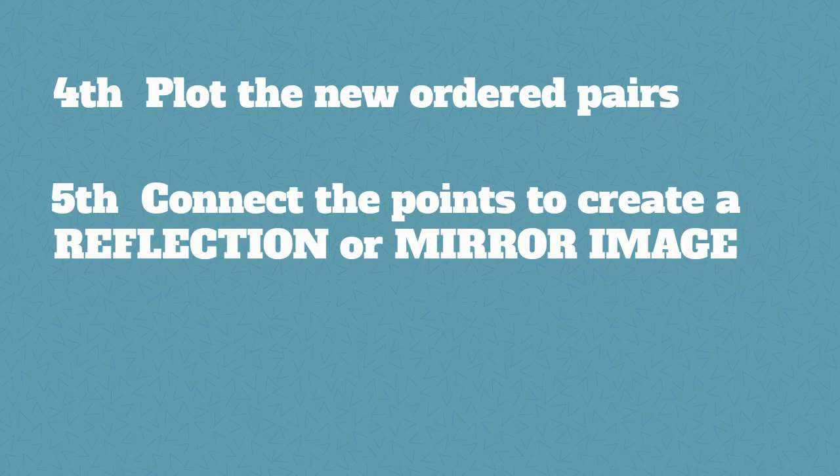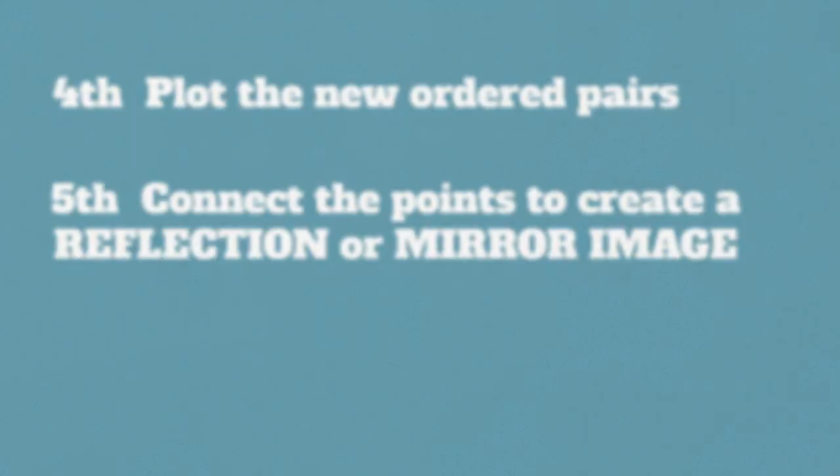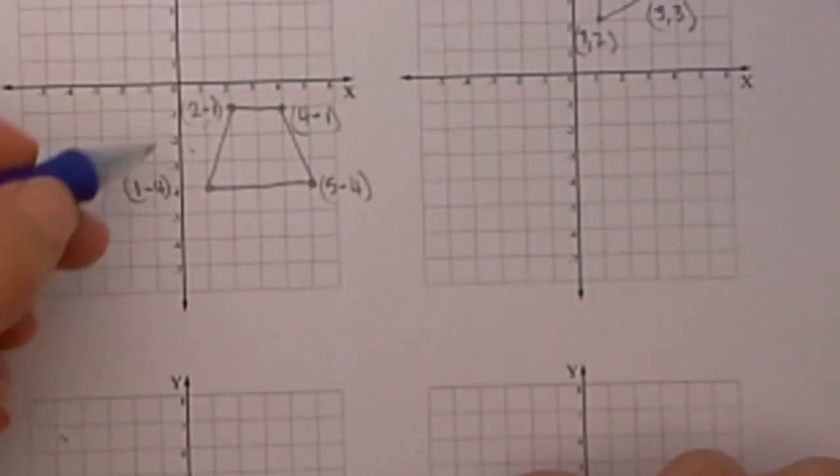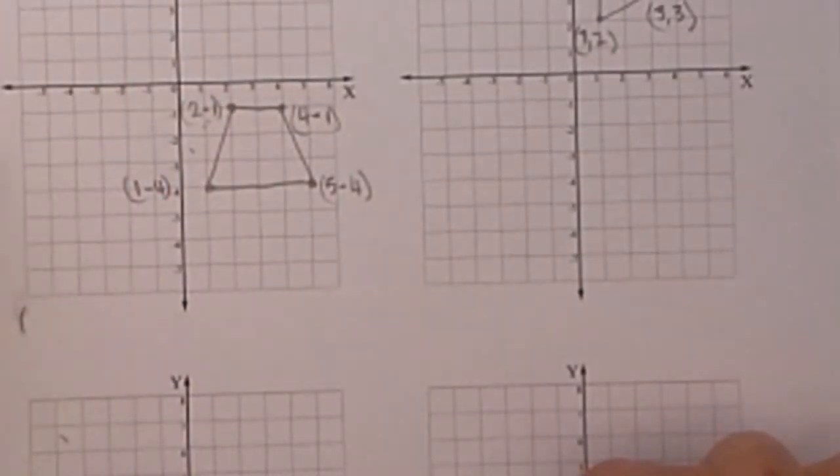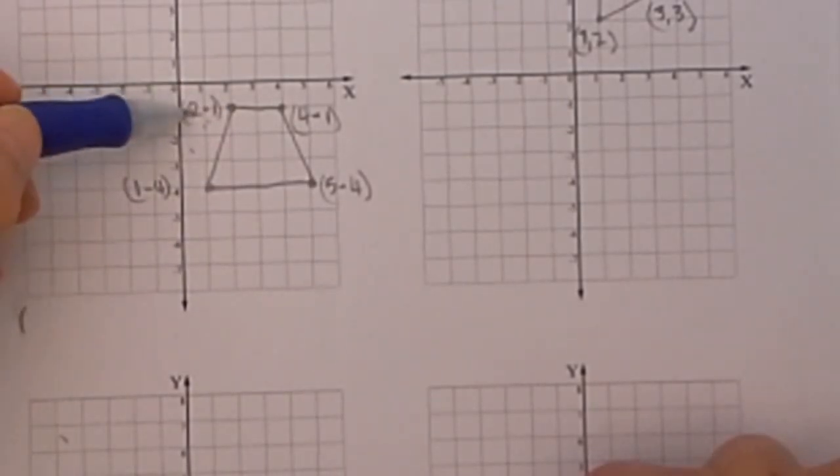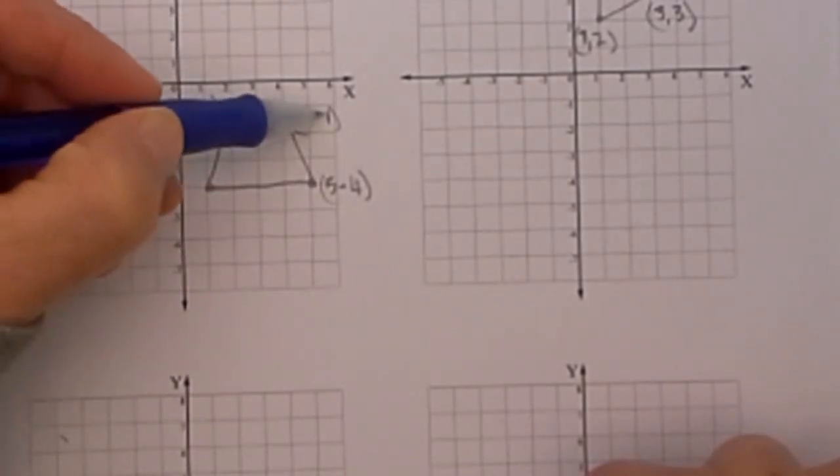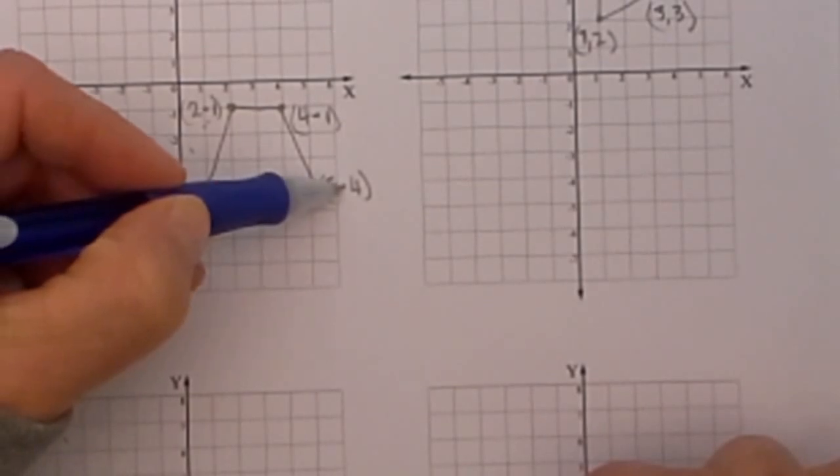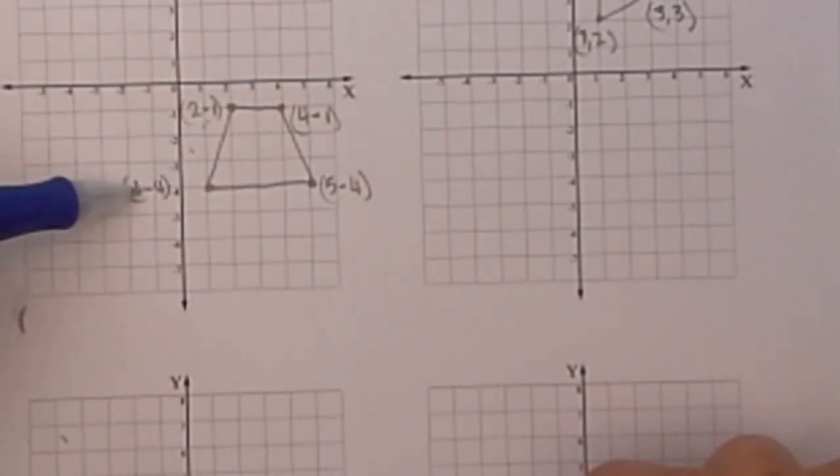Let's look at an example of creating a reflection. Let's go ahead and set up this first reflection. I have already got this shape drawn in. The coordinates are (2, -1), (4, -1), (5, -4), and (1, -4).